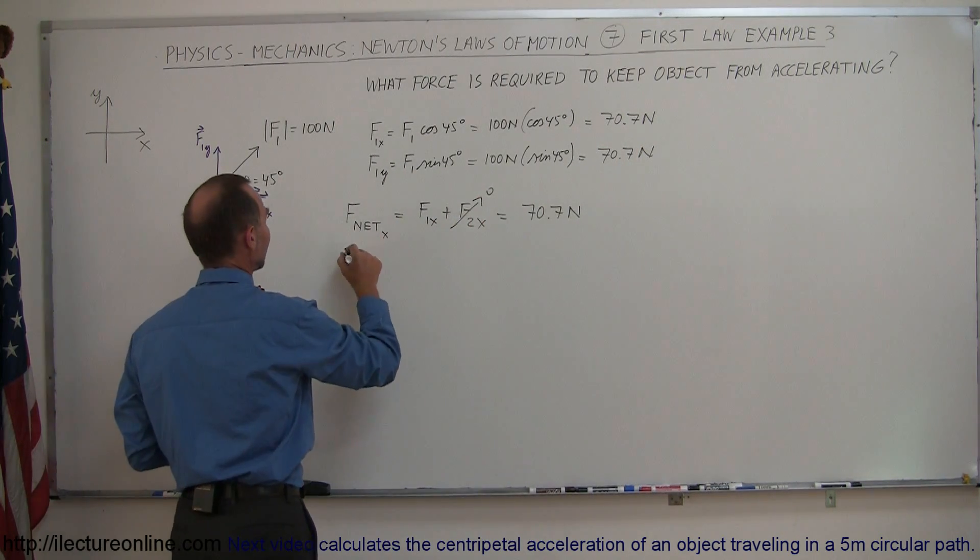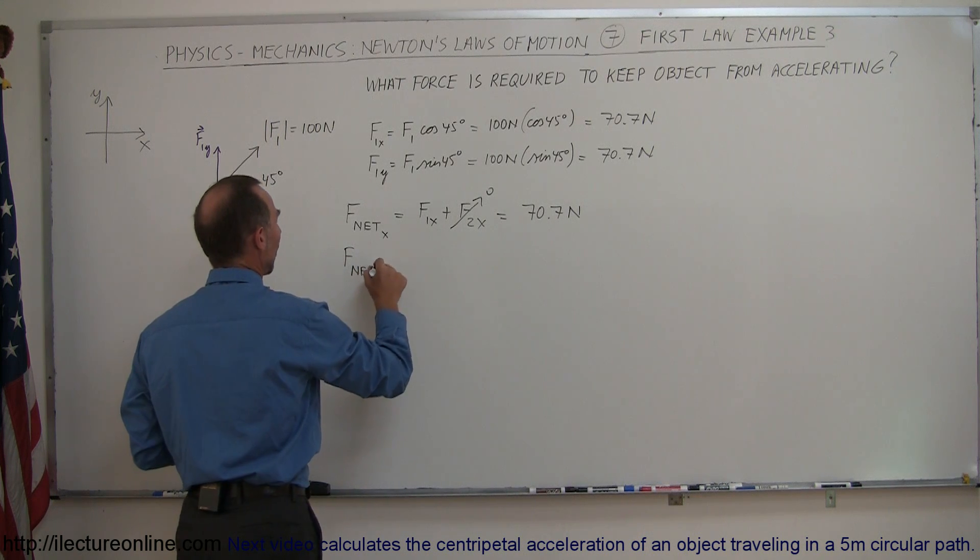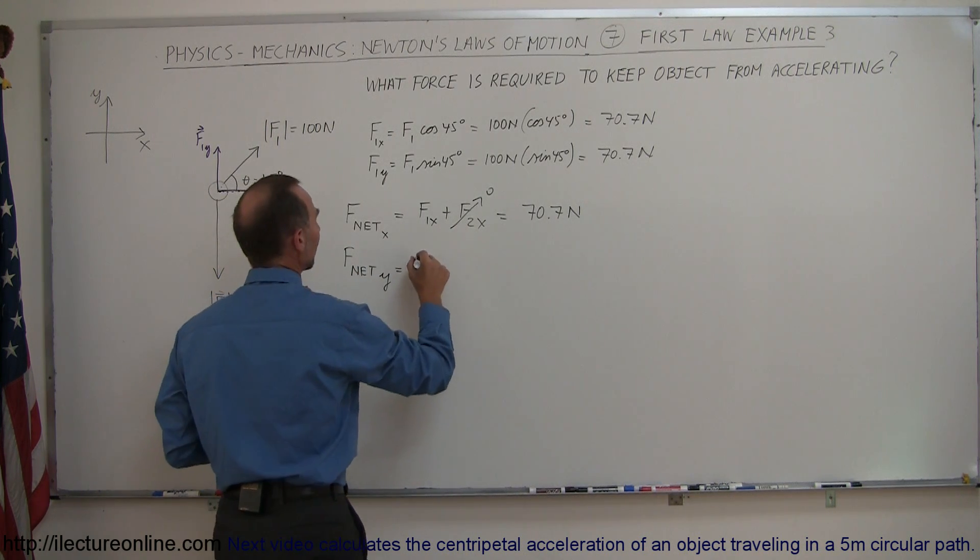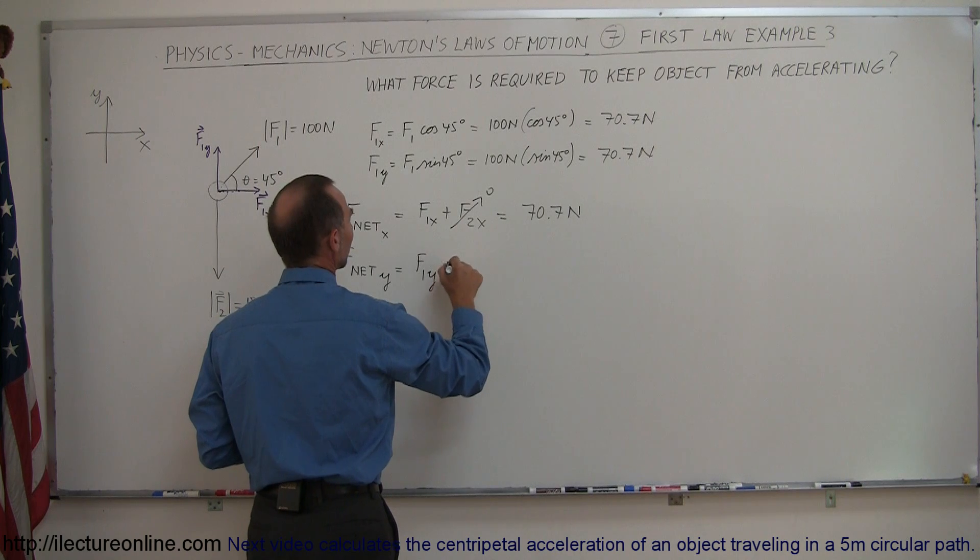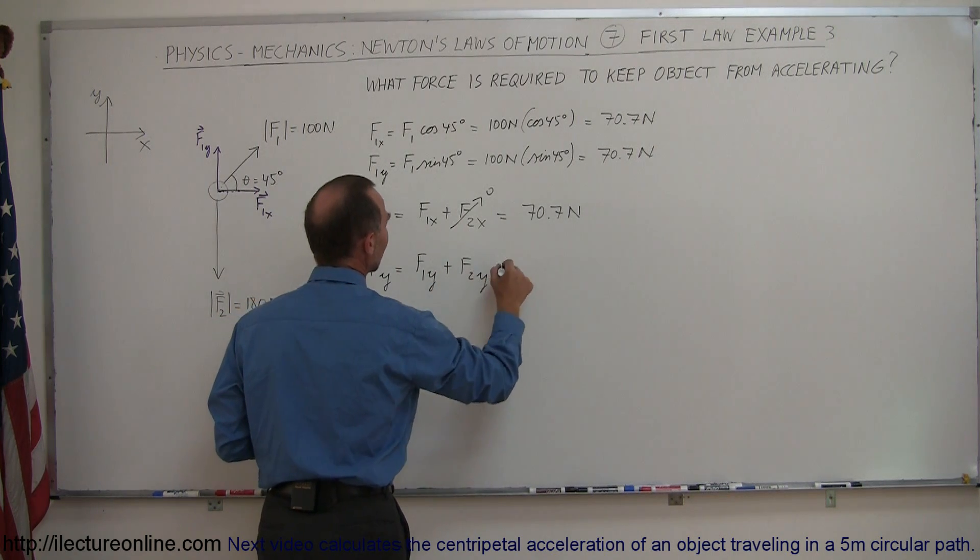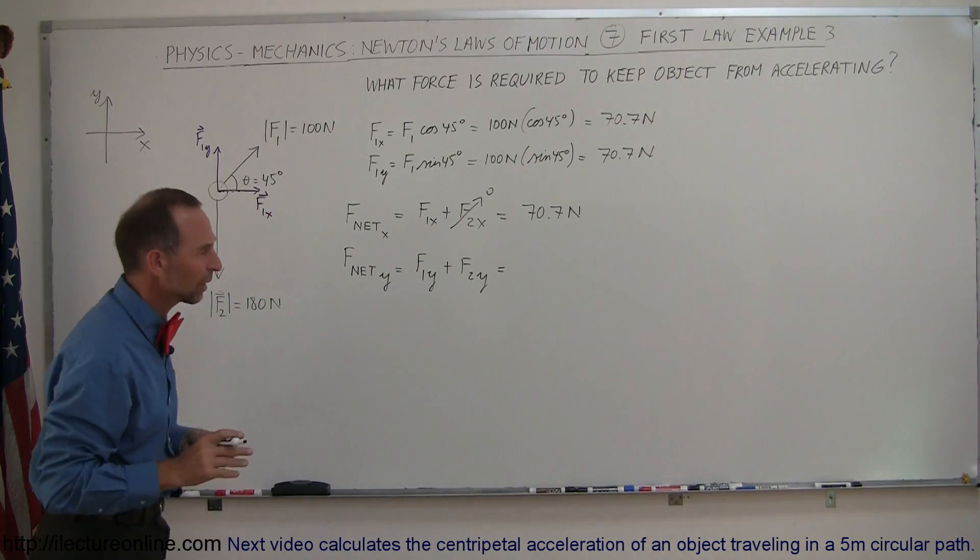Now adding the Y components together, F net in the Y direction is equal to F1Y plus F2Y. Now here we have to be careful. We do have to take into account direction.